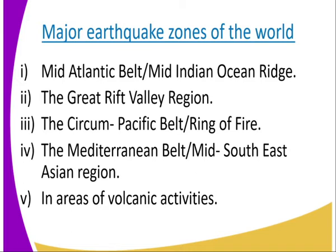Then we have the circum-Pacific belt, the Ring of Fire. The reason why it is referred to as the Ring of Fire is because this is the main area where we have major and catastrophic earthquakes. Then we have the Mediterranean belt and the Mid-South-East Asia region. Then we have areas of volcanic activities — those areas that have volcanic features, which are associated with earthquakes.